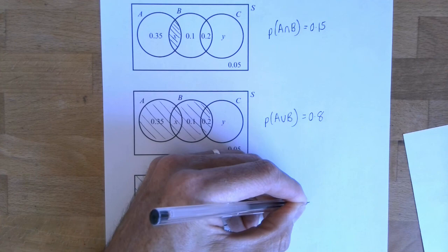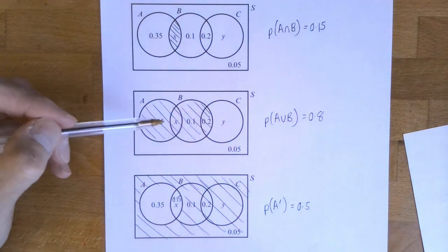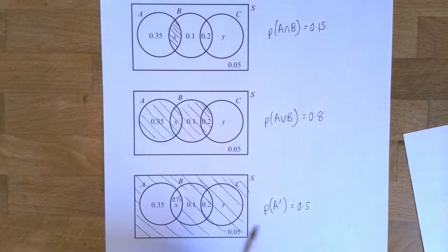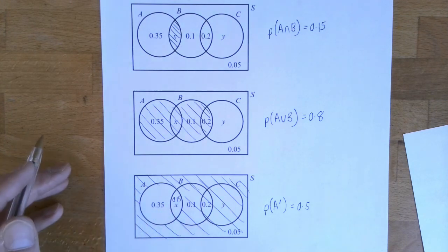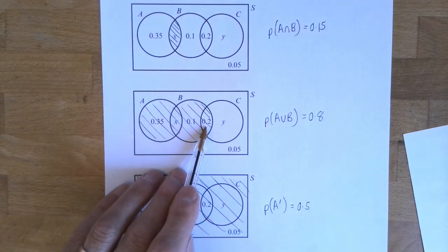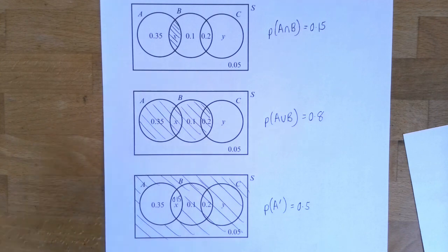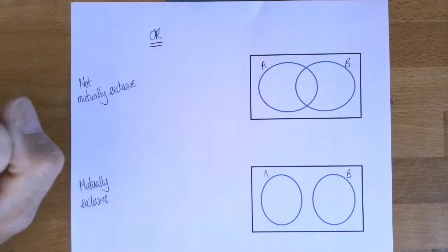So the probability that you're not in A is also a half. That wasn't part of the question, but I wanted to clarify those three sorts of notation. It's important you understand that A dash doesn't include that bit, and A intersection B does include this bit here. Let's move on to something new today.